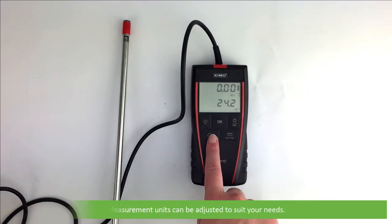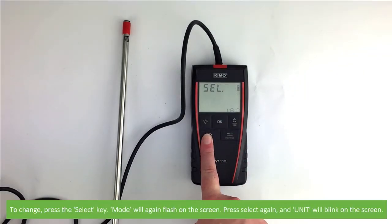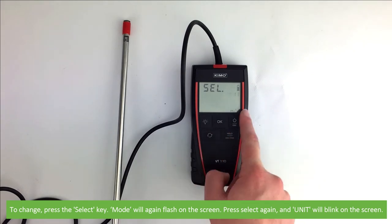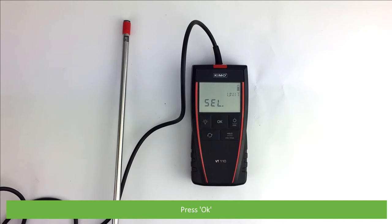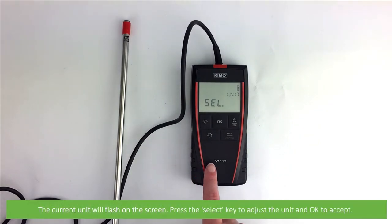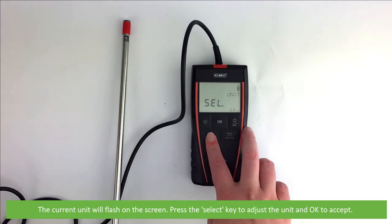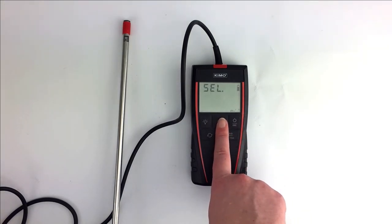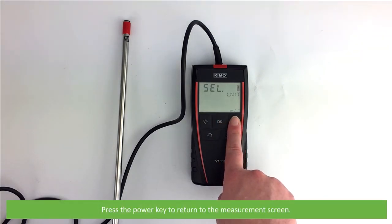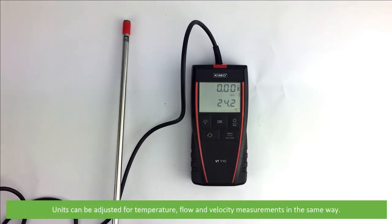Measurement units can be adjusted to suit your needs. To change, press the select key. Mode will flash on the screen again. Press select again, then unit will blink on the screen. Press OK. The current unit will flash on the screen. Press the select key to adjust the unit and OK to accept. Press the power key to return to the measurement screen. Units can be adjusted for temperature, flow, and velocity measurements in the same way.